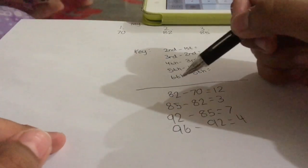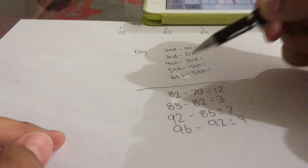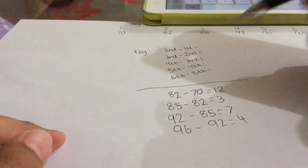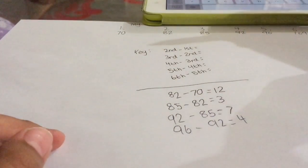And then the last chain, the sixth number minus the fifth number. In my case, that's 169 minus 96.